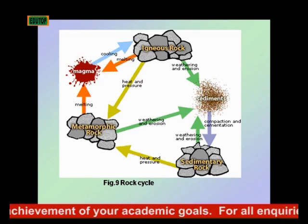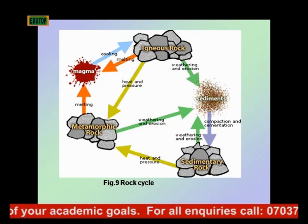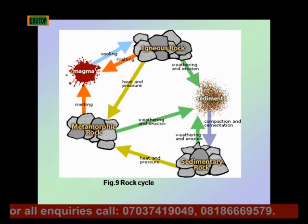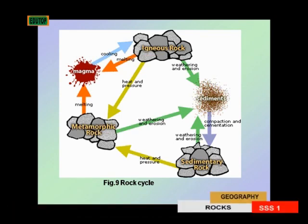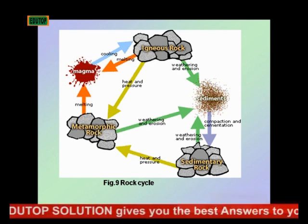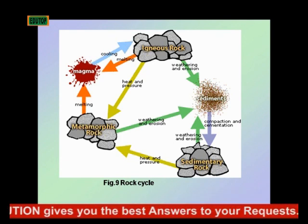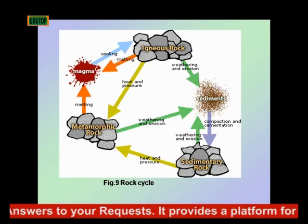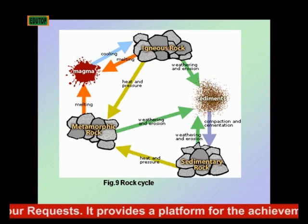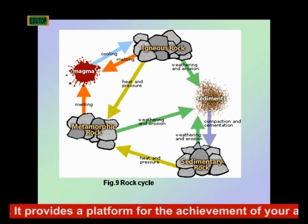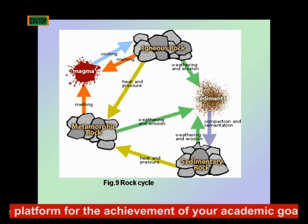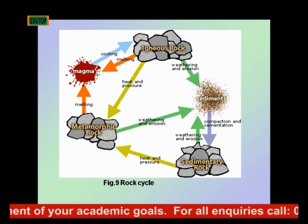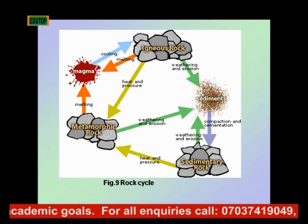Sedimentary rocks can also, under the action of heat and pressure, deform to form metamorphic rock. Metamorphic rocks are modified rocks, and their modification is usually as a result of heat and pressure. Also, the sedimentary rock can undergo the effect of weathering and erosion to give rise to sediments, which are transported and deposited, and undergo a process of compaction and cementation to form another sedimentary rock.